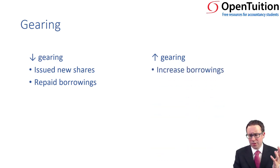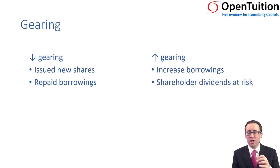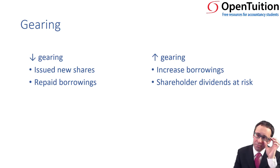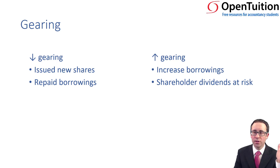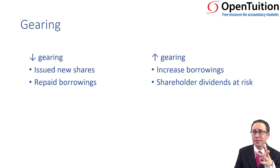If gearing has gone up, usually it's because you've got increased borrowings. If borrowings go up, that puts the dividends of the shareholders at risk. Increased risk can have an impact on the market value of a business. That brings in Modigliani and Miller theories and traditional theories on gearing, which is more appropriate to financial management. But if you've done financial management, you can bring these aspects in — it will get you credit.